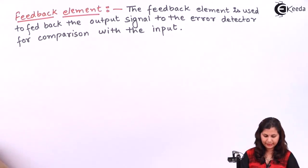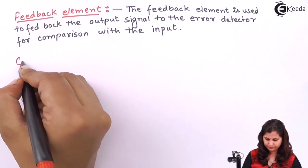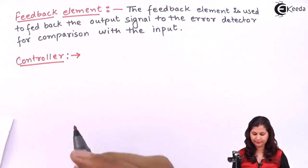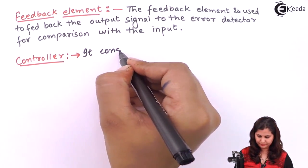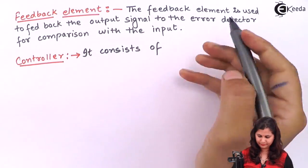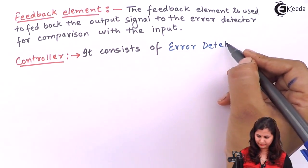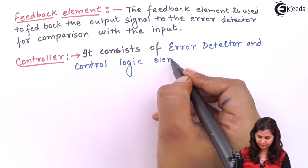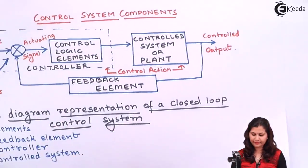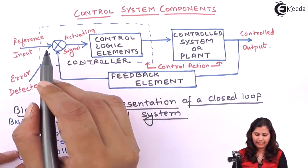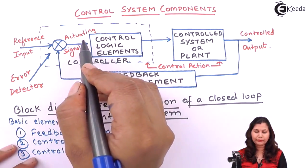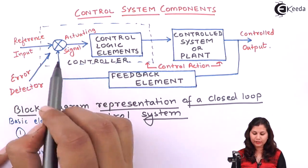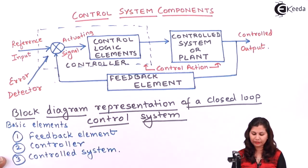The second element is the controller. This controller consists of the error detector and the control logic elements. The error detector receives the input and compares it with the feedback signal, and produces the actuating signal. The function of this error detector is to compare the reference input with the feedback signal.